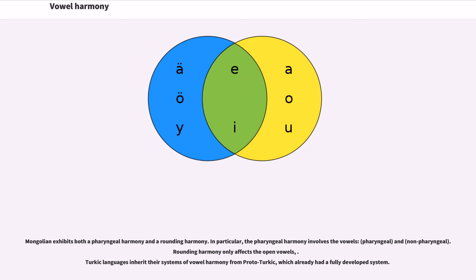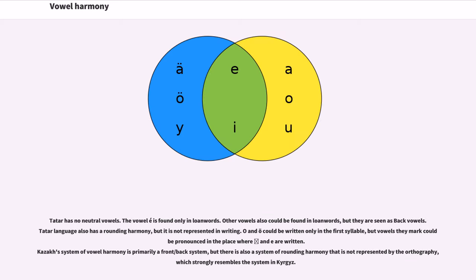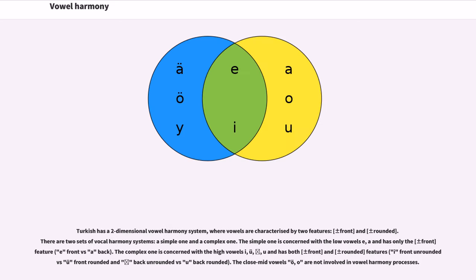Azerbaijani's system of vowel harmony has both front/back and rounded/unrounded vowels. Tatar has no neutral vowels; the vowel E is found only in lone words. Other vowels also could be found in lone words but are treated as back vowels. Tatar also has a rounding harmony not represented in writing. Kazak's system of vowel harmony is primarily a front/back system, but there is also a system of rounding harmony not represented by the orthography, which strongly resembles the system in Kyrgyz. Kyrgyz's system of vowel harmony is also primarily a front/back system with a similar rounding harmony.